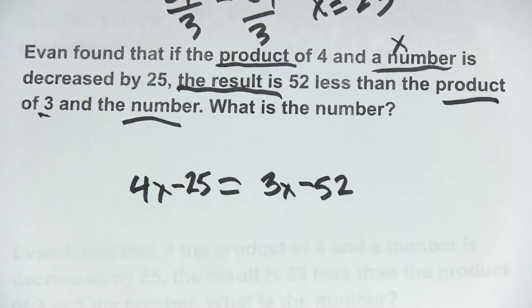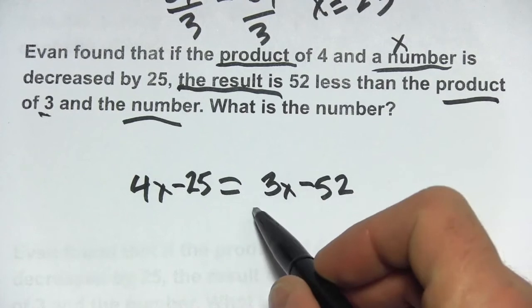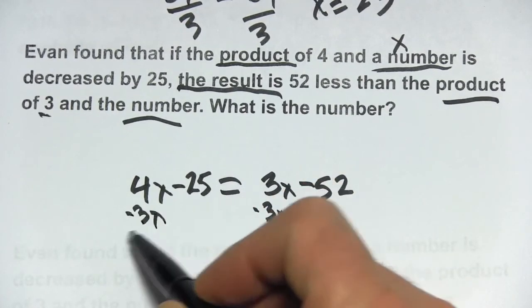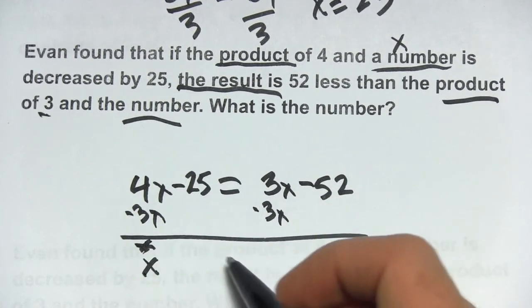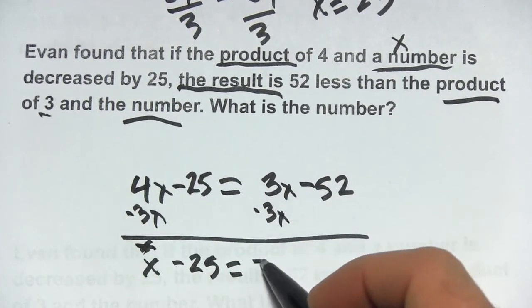So that's our equation. Now we need to solve it. I think I'm going to subtract 3x from both sides. That gives us, sorry, x over here, just 1x. No x's over here.